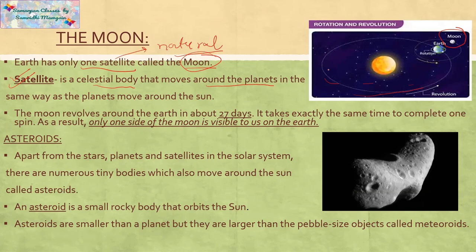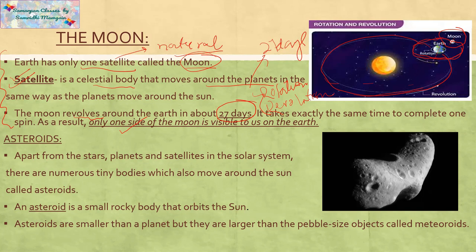The Moon revolves around the Earth in about 27 days. It is revolving around the Earth in this path and is also rotating on its axis. The Moon's revolution time and rotation time are the same — around 27 days. So that means we can only see one side of the Moon.